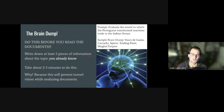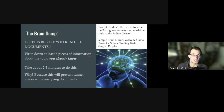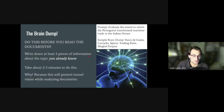For example, when I looked at this prompt, five things came to my mind: Vasco da Gama, the caravel, spices, trading posts, and the Mughal Empire. Maybe some of those things are already mentioned in the documents, and maybe some of them aren't. The whole point is, I have them written down so I'm not going to forget them, and I don't get tunnel vision when analyzing the documents.